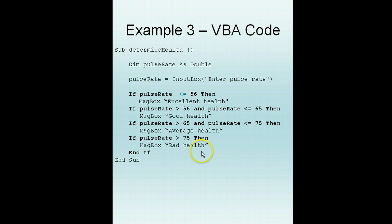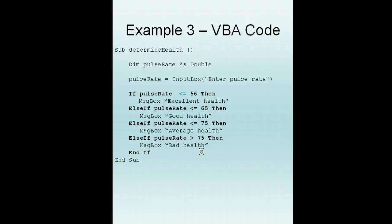Now another way of doing this is doing this. This will still give us the same output but we avoid using the between logic. It's just a different logic. So if you trace through, if pulse rate is less than or equals to 56, that's excellent health.